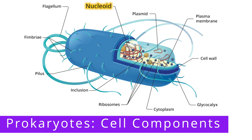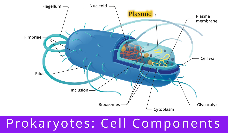In addition to this chromosome, many prokaryotic cells also have plasmids. Plasmids are circular DNA molecules found outside the chromosome that often provide an advantage to the cell, such as antibiotic resistance. You can think of plasmids as bonus genes.